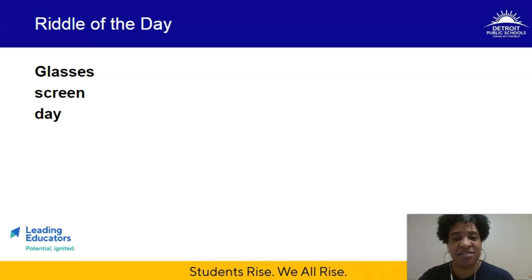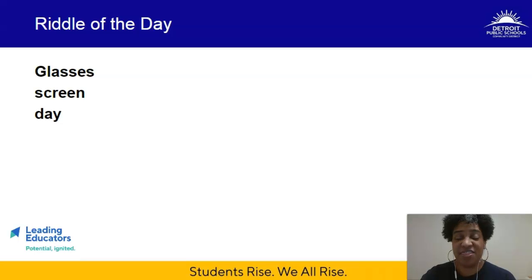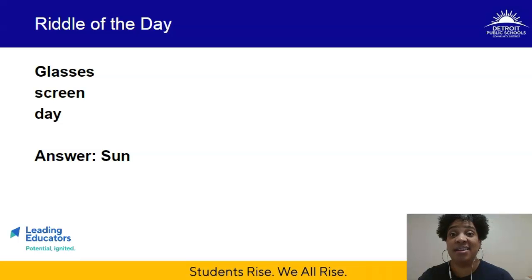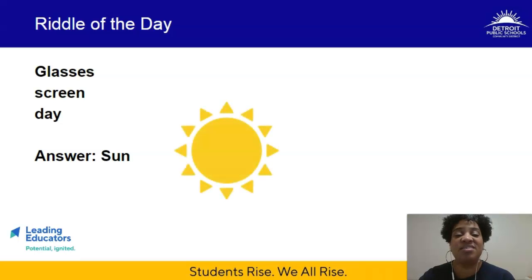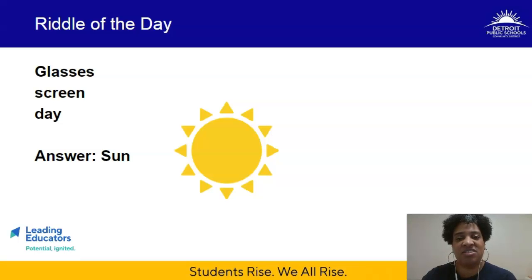If you need additional time, pause now because I'm going to reveal the answer and I don't want to spoil it for you. The answer — the missing word association — is sun. Sunglasses, sunscreen, Sunday. Sun is our missing word association. Did you get it? Now that we've had some exercise with decoding, making inferences, and drawing conclusions, let's move on for today.